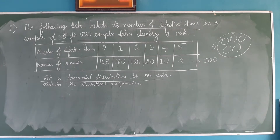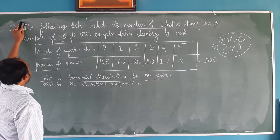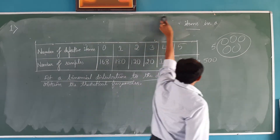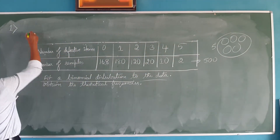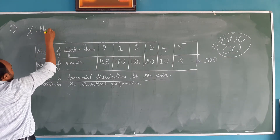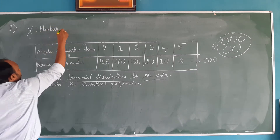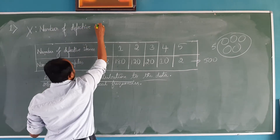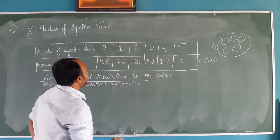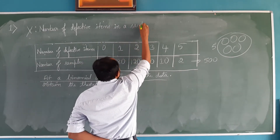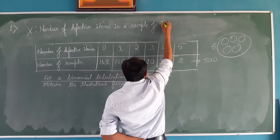These are observed frequencies, but for this we need to find the theoretical frequency. Before finding a theoretical frequency, first of all we need to fit a binomial distribution. So let us solve this problem. First we need to define a random variable. What is the random variable for our given problem? X is a random variable — it tells us about number of defective items in a sample of 5 items.